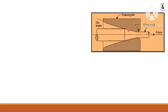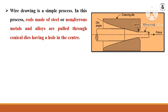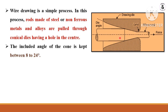An important parameter is the die angle, which is used to reduce the cross-sectional area. Wire drawing is a very simple process. The rod is made of steel or non-ferrous metals like aluminium, copper, and alloys — all materials having good ductility, so they are easily converted into the desired shape and size. The included angle of the cone is kept between 8 degrees to 24 degrees, depending on the application.